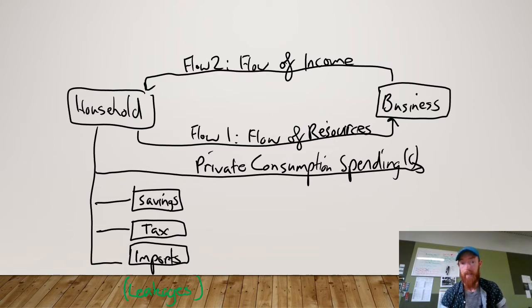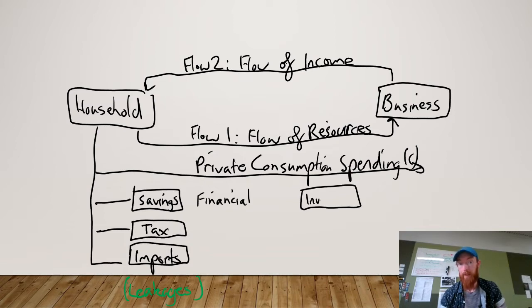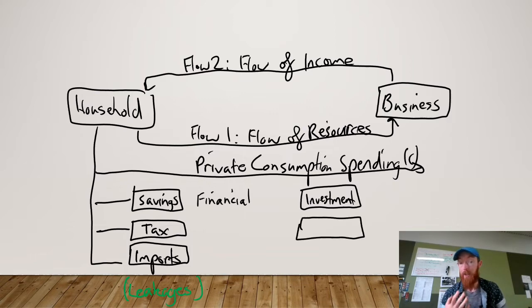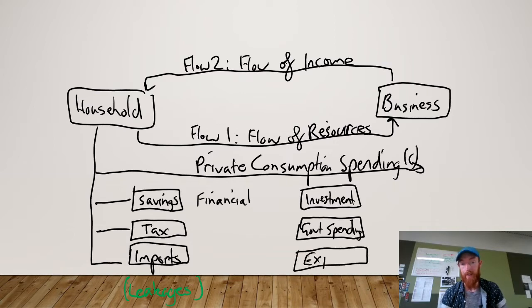On the other side, savings come into the financial sector. Businesses and households can borrow money to invest in the economy — we call that private investment spending — which injects more money into the economy to increase demand. The government uses our tax to inject into the economy on infrastructure and paying government employees, which we call government spending. And sometimes other countries buy our goods and services — that's exports — bringing money into our economy that wouldn't otherwise be there. These are all injections coming in.